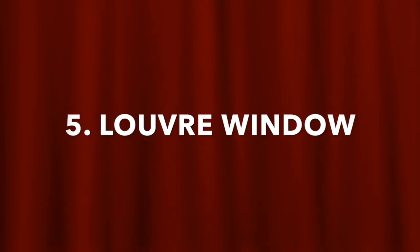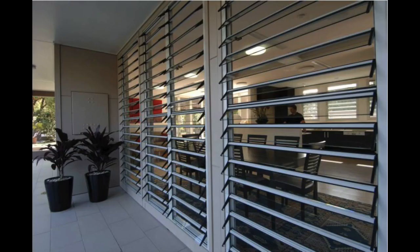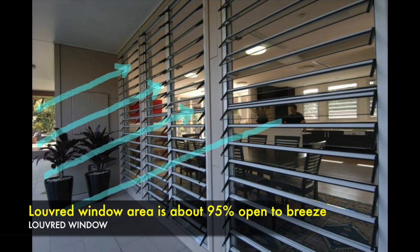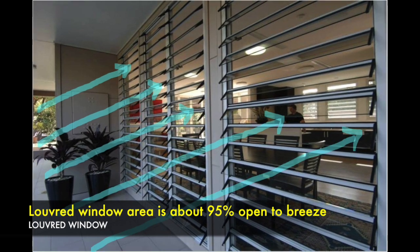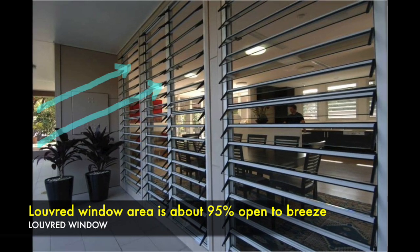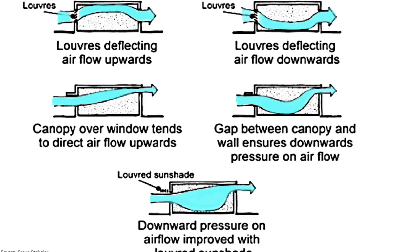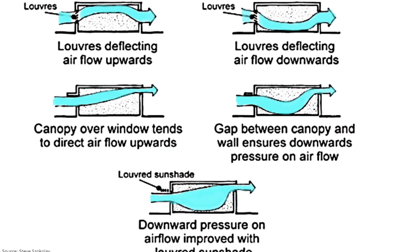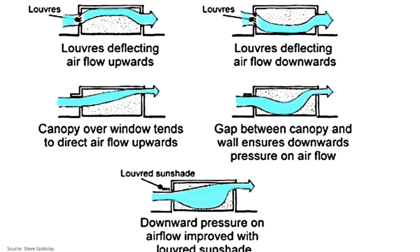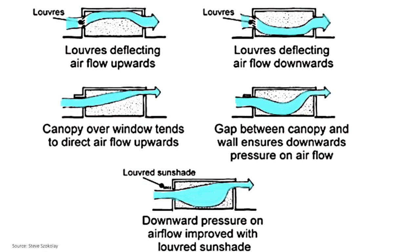5. Louvre windows. Louvre windows allow ventilation through the entire window area, which is about 95% open to breeze. Here you can see how louvre windows help to vary ventilation paths and control airspeed.